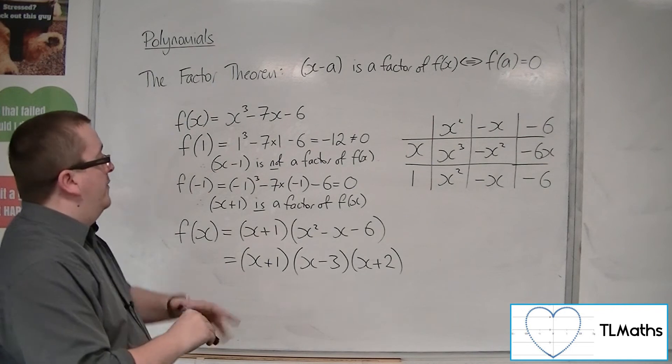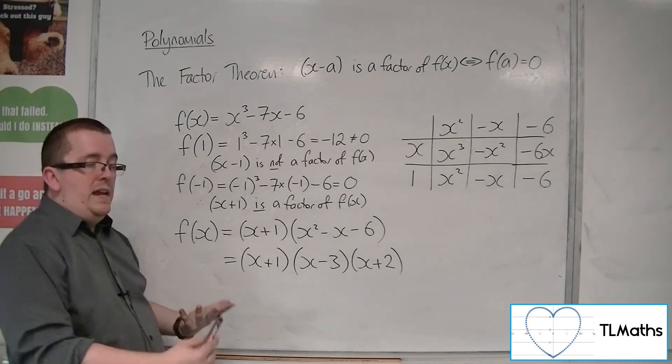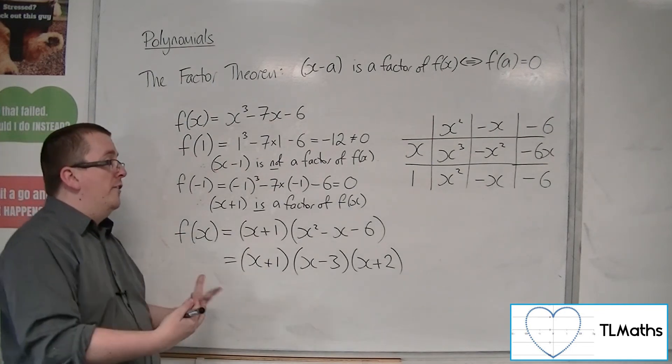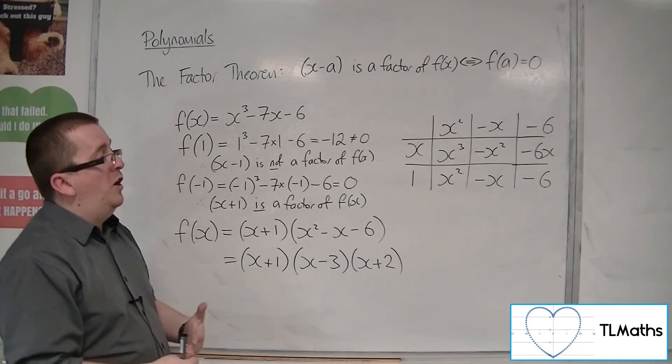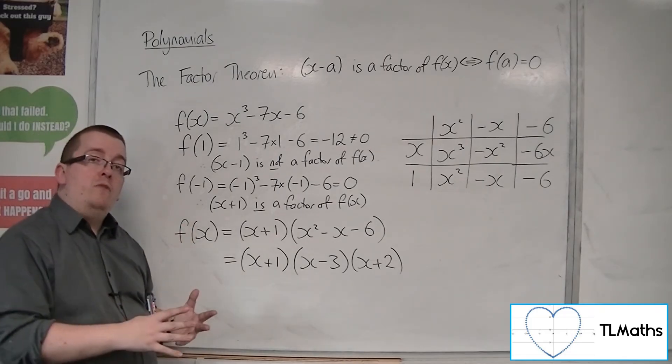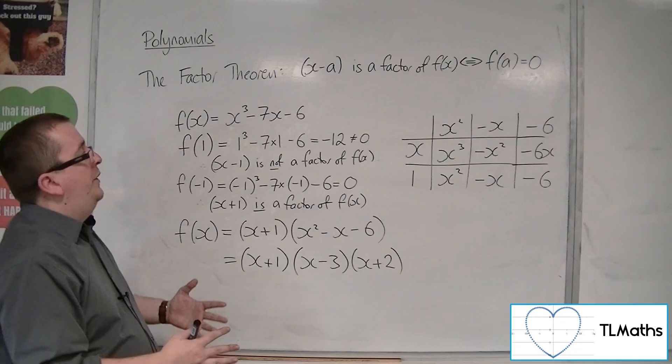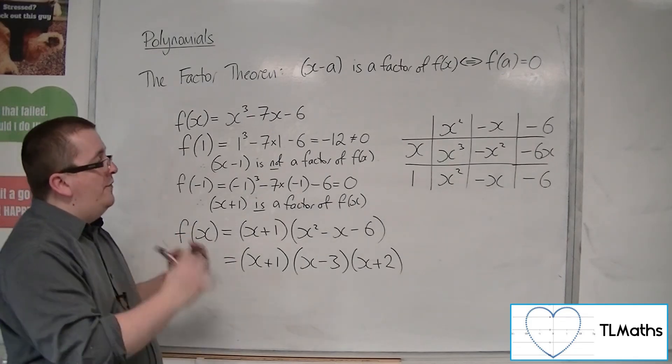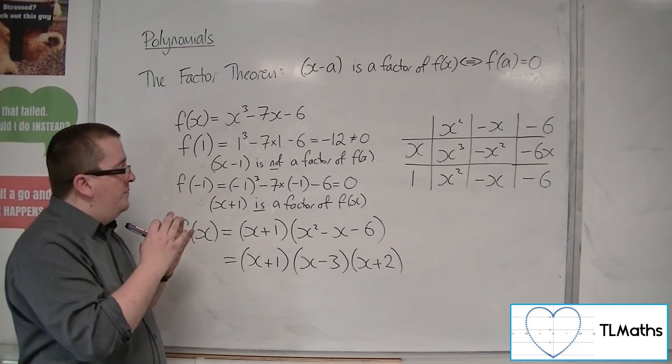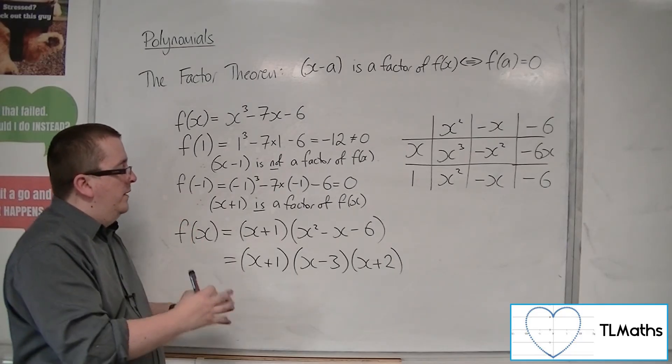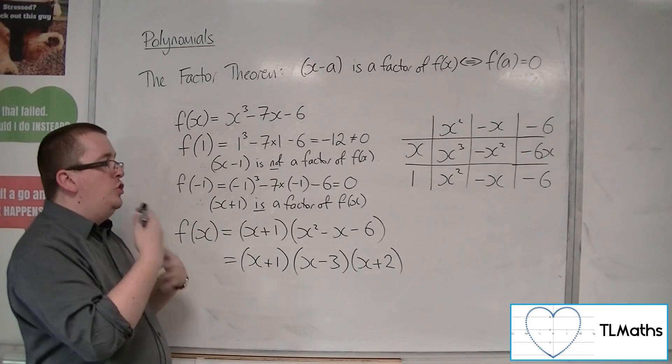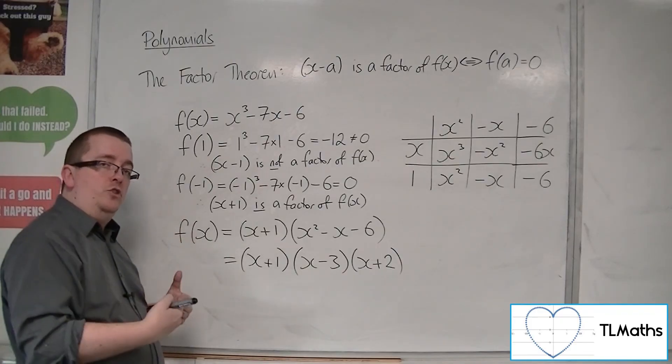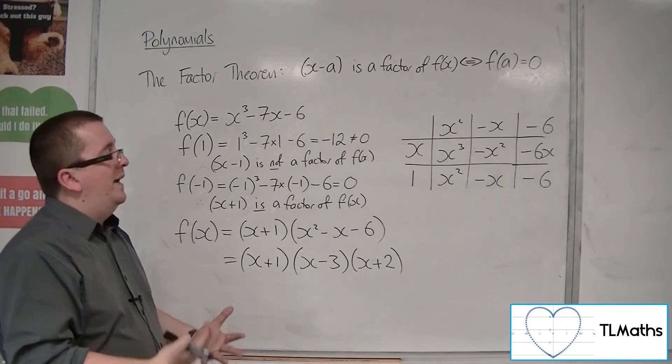So you can see the factor theorem enabled us to find one of the factors, and then we could use polynomial division to find the rest. So in certain circumstances, for certain polynomials, if they have a factor that works for this, then we should be able to get to the next stage. This is how we use the factor theorem.